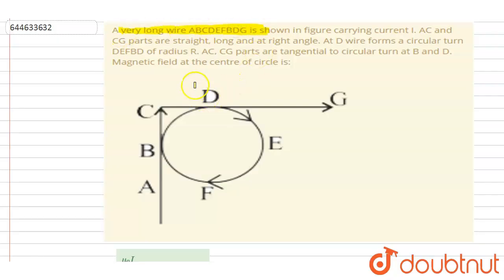You can see ABCDEFG is shown in the figure and it is carrying a current I. EC and CG are straight wires, you can see, at right angle.